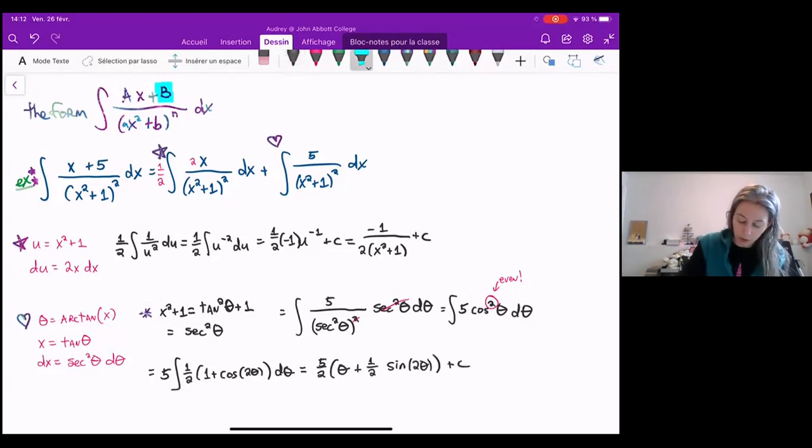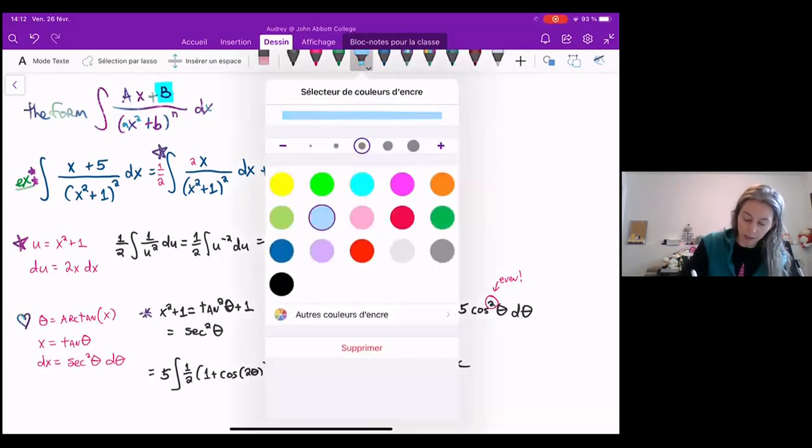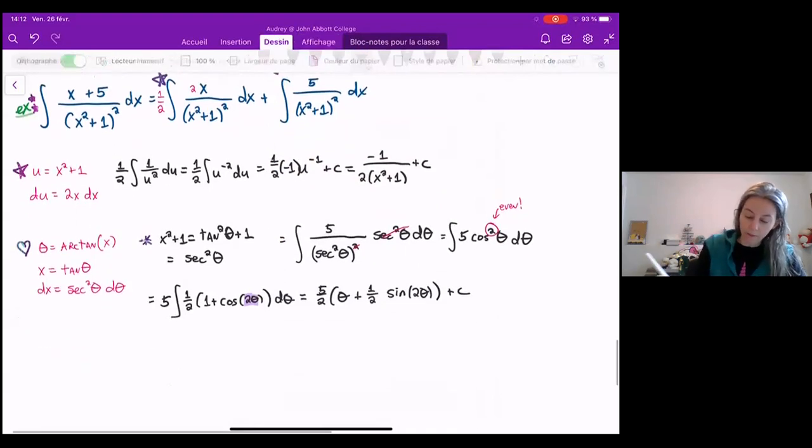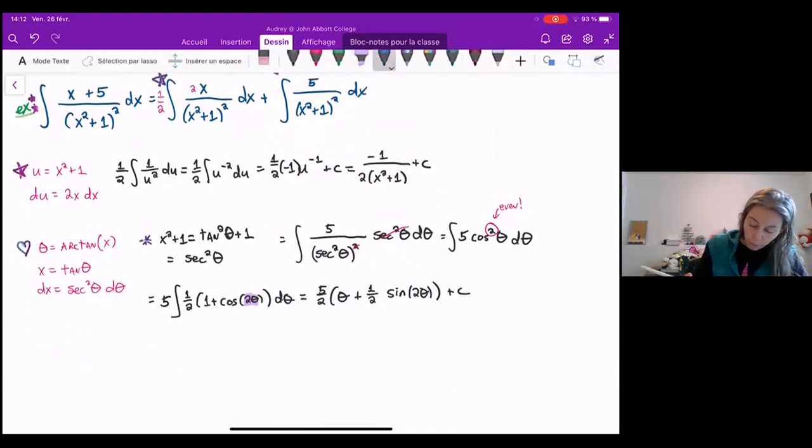And now remember here, the reason that we are dividing by that 2 is because the derivative of 2 theta is 2. It's just a constant, so we have to divide by that constant. Now we're going to have to do our trig triangle. So we'll do this here, trig triangle, so that we can solve for theta and sine of 2 theta.